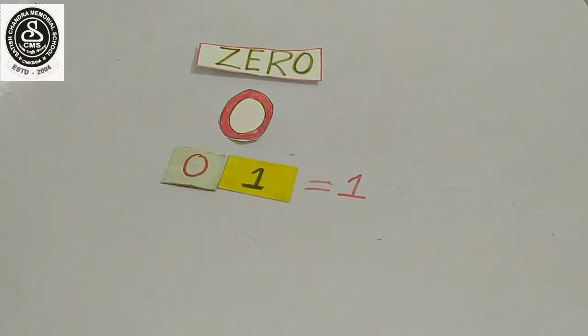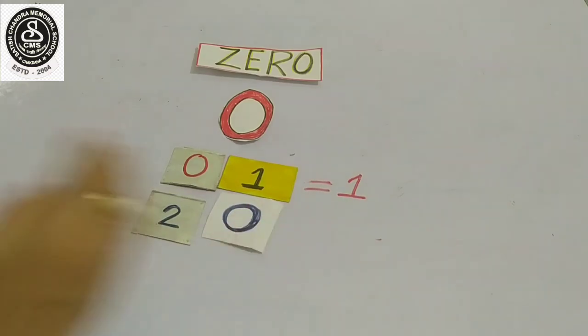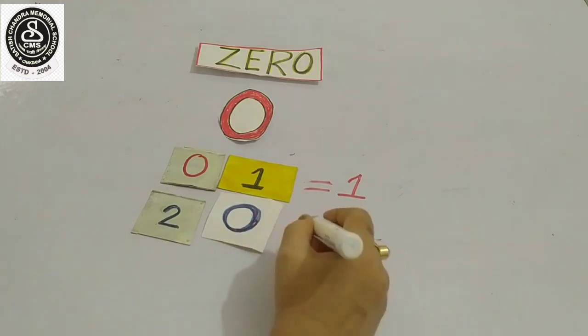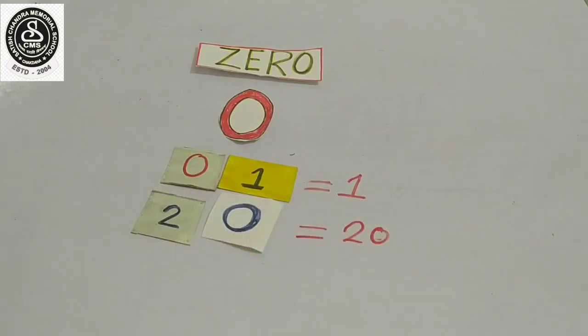But when we add zero after any number, it increases the value of that number. So 2, 0, 20 is equal to 20. That means when we add zero after any number, the value gets changed.